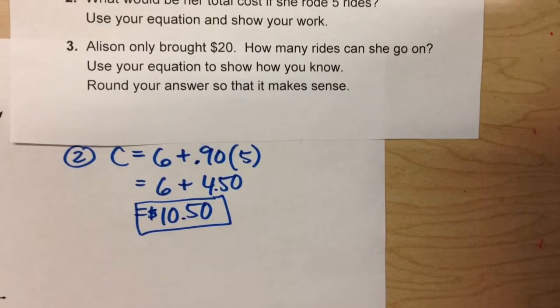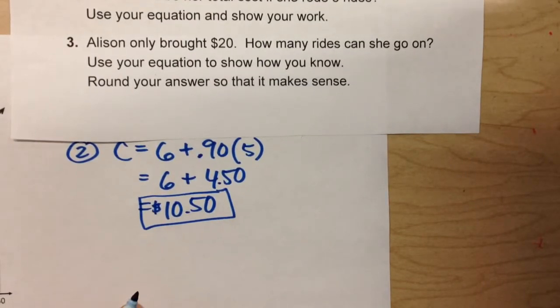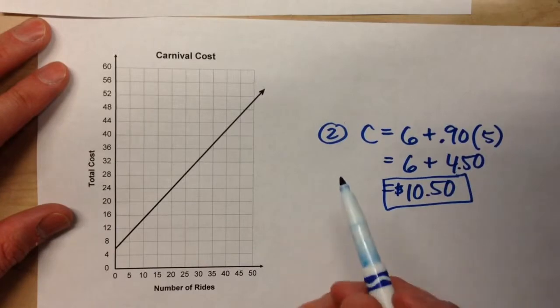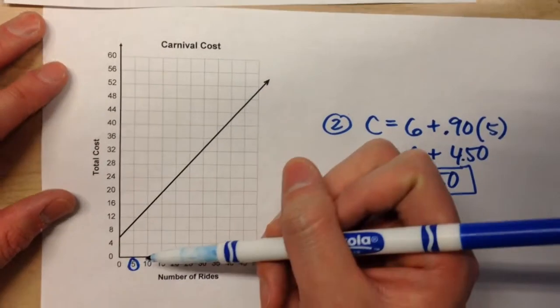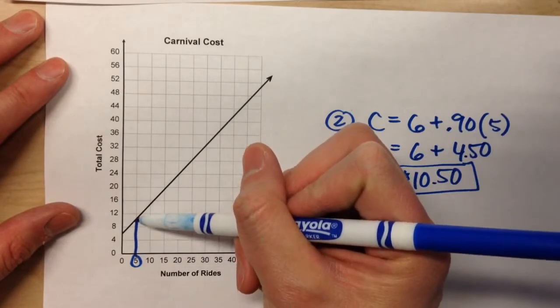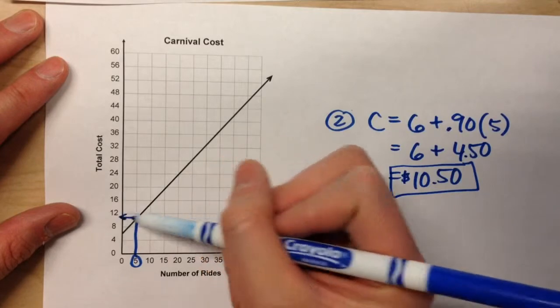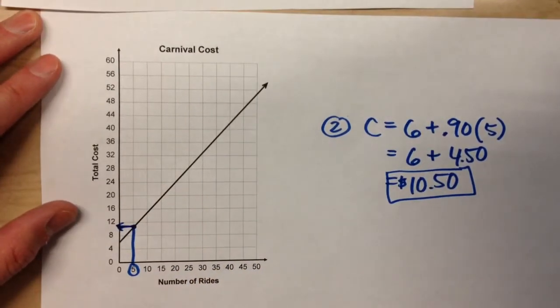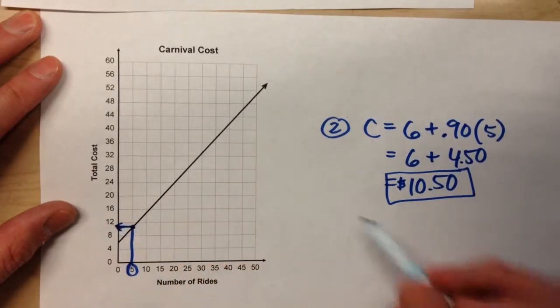But today, we learned that we could find a very similar or very close to the same answer using our graph. So right over here, I have the graph of the costs. So all we have to do is find five in the number of rides right here. Go up along the grid line until we hit the graph and look over. And we could have gotten a pretty good estimate for that answer just from that quick look at the graph. It's a little more than 10. I'd say it's about 11.